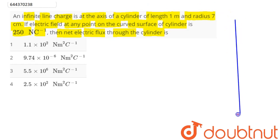Here we know this is an infinite charged wire having length as 1 meter and radius as 7 centimeter. Now, electric field on the curved surface of this cylinder is given as 250 newton per coulomb.